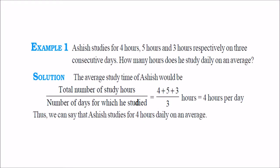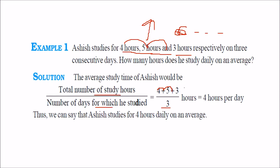For example, Ashi studies for 4 hours, 5 hours, and 3 hours respectively on 3 days. How many hours does he study daily on average? Add 4 plus 5 plus 3, divided by 3. That is 12 divided by 3, which equals 4. So 4 hours per day is the average study time of Ashish.